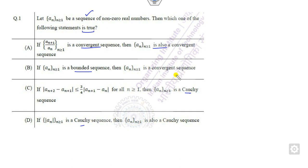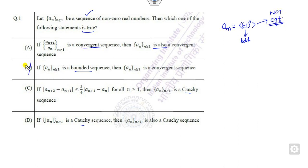You have to disprove these with counter-examples. Consider the sequence (-1)^n — this is a bounded sequence because its values are either 1 or -1, but it is not convergent since the limit is not well defined. So that option is cancelled. Similarly, sin(n) is bounded between -1 and 1 but is again not convergent, so that option is also cancelled.